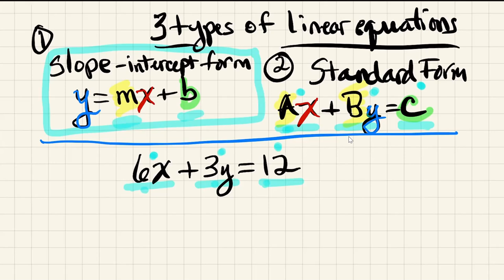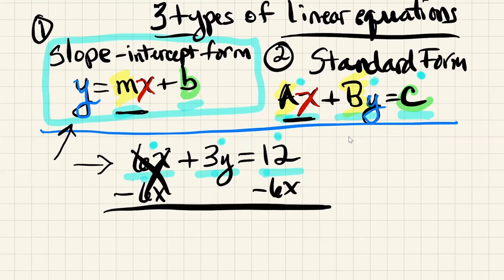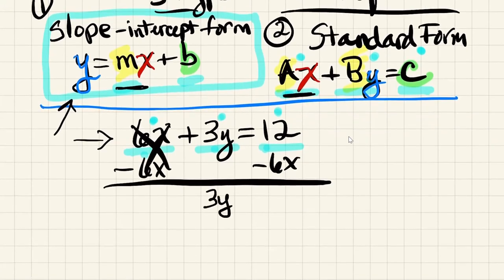So if I'm going to change this equation to this form, I need to get the y by itself. So my first step is going to be to move the x term to the other side of the equation, because in this equation, the Ax is on the left side of the equal sign, and in this equation, the mx is on the right side of the equal sign. It's a positive 6x, so I'm going to subtract it. When we're moving things in equations from one side of the equal sign to the other, we use their inverse or their opposite. 6x minus 6x is 0. 3y is still here. Negative 6x plus 12.